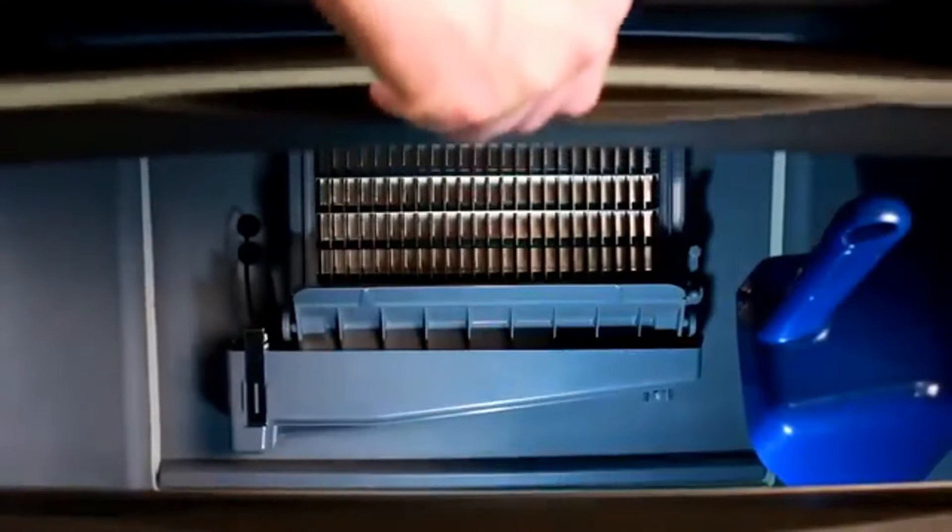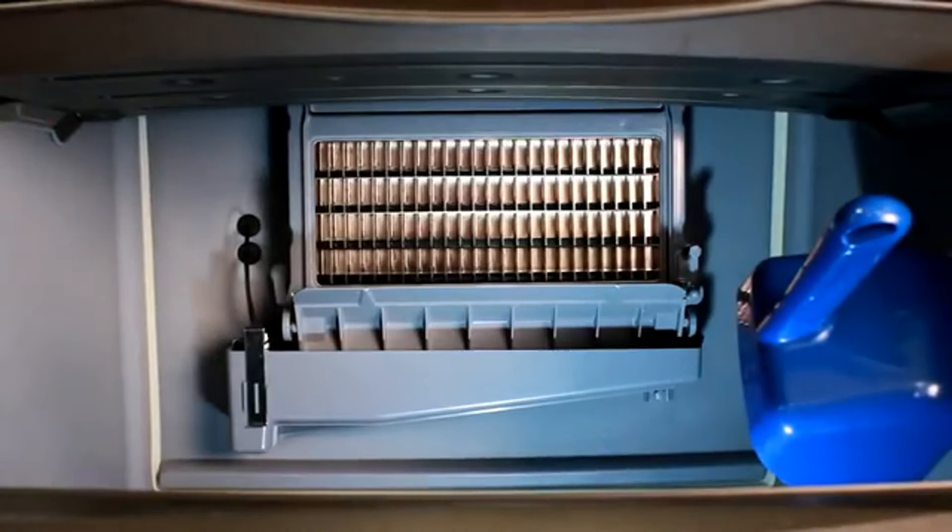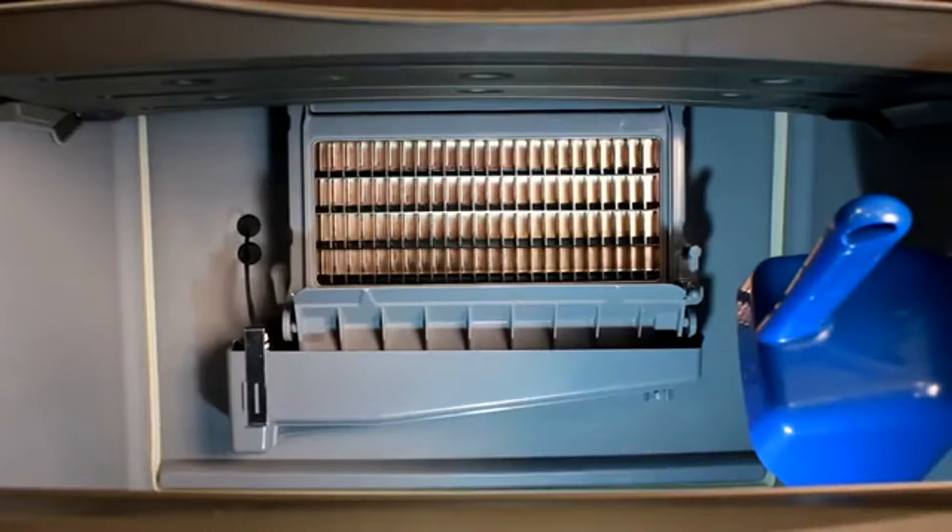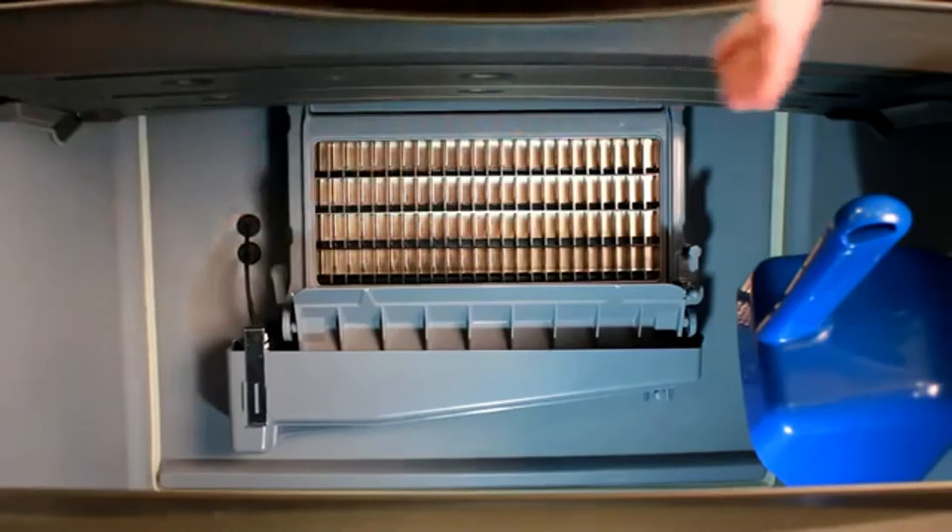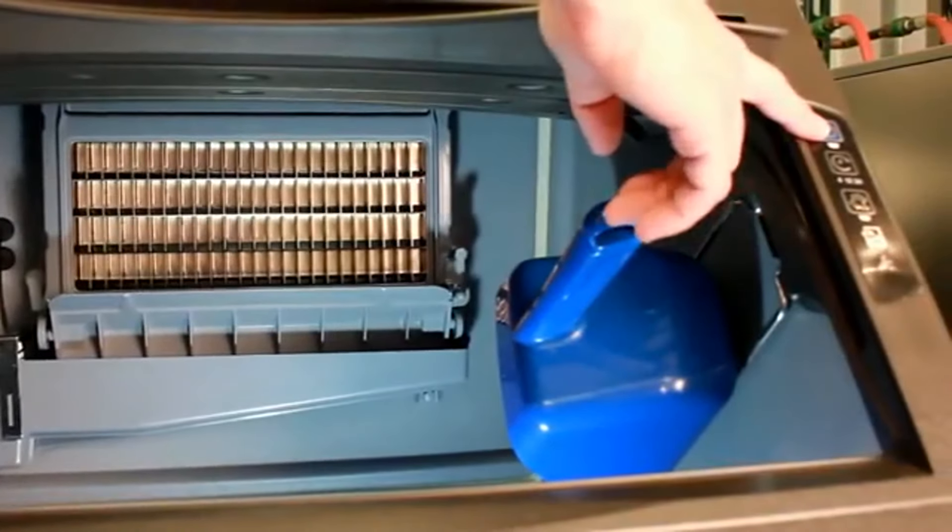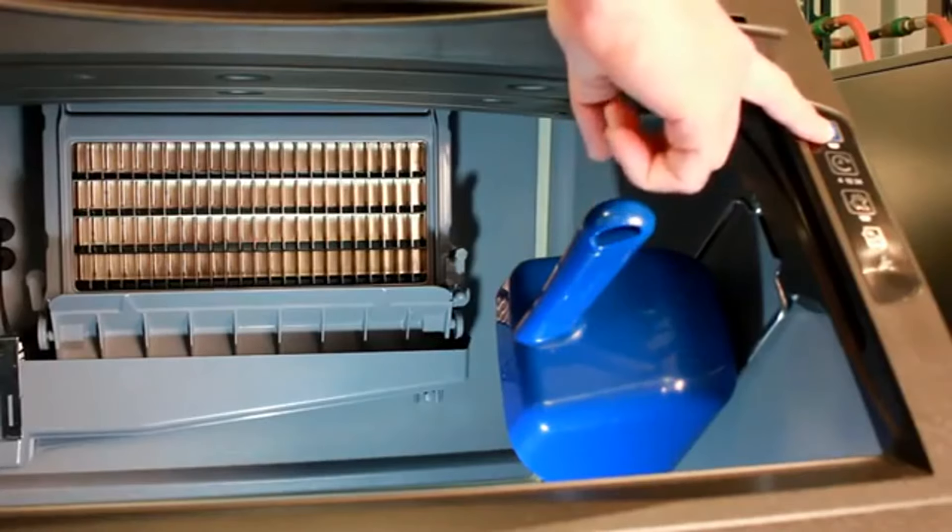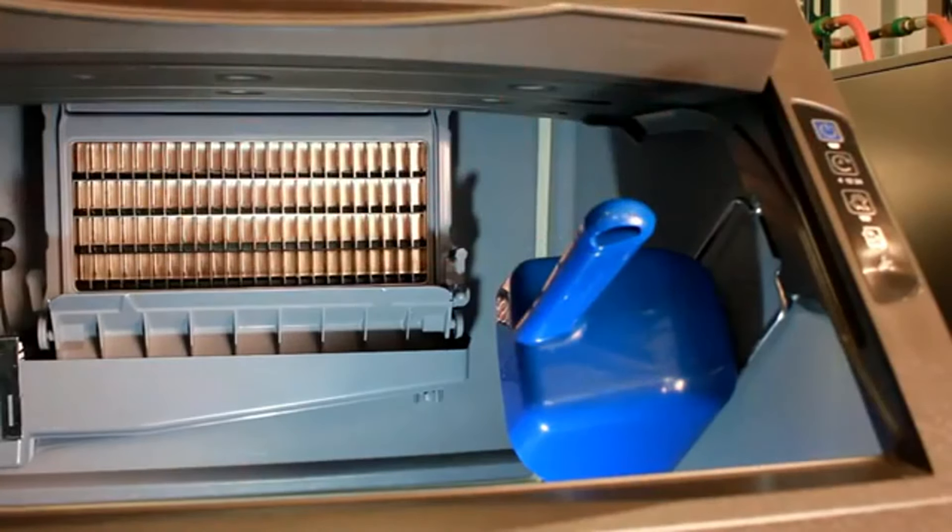So to get started, first open the bin door. Make sure that there is no ice on the evaporator, so either wait for the freeze cycle to complete, then push the button to turn off the machine, or power the machine down, and let the ice on the evaporator melt before moving on to step number two.